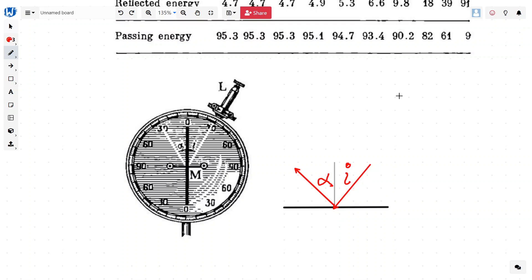Snell found that after doing this experiment at different angles that always i is equal to alpha. This means that the light ray coming will always reflect at the same angle from the normal.